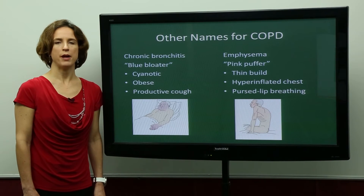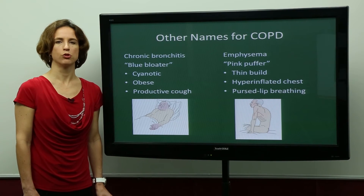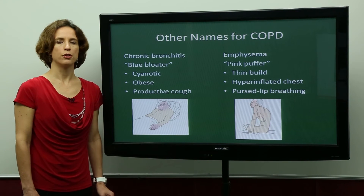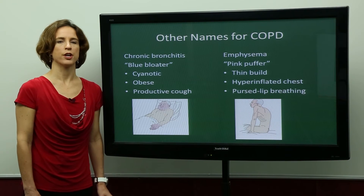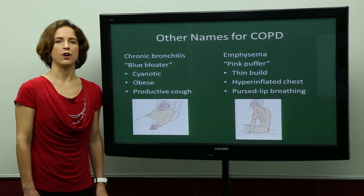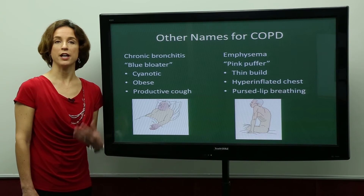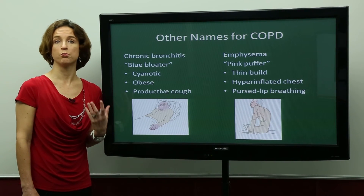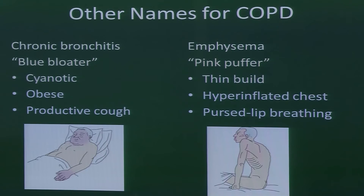Sometimes you'll see patients referred to as blue bloaters and pink puffers. Blue bloaters are patients with chronic bronchitis who have cyanotic symptoms, so they may look sort of blue. Frequently these patients are obese and they have a very productive cough, which is what leads to the term chronic bronchitis.